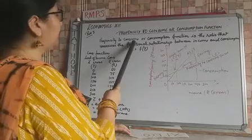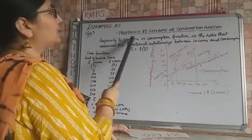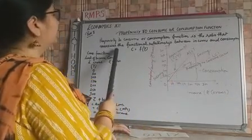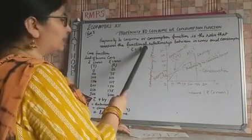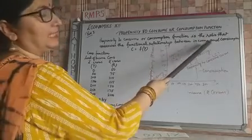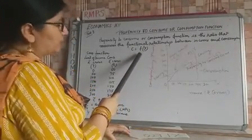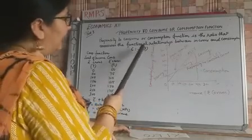The definition of it is propensity to consume or consumption function is the ratio that measures the functional relationship between income and consumption. So in the equation form we can write it c is the function of y.